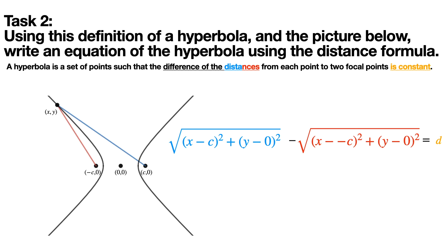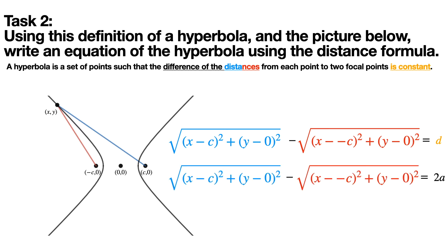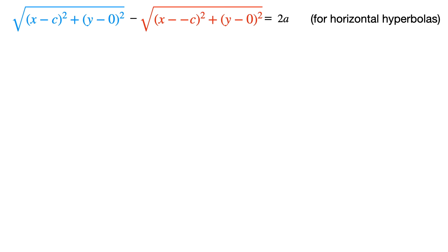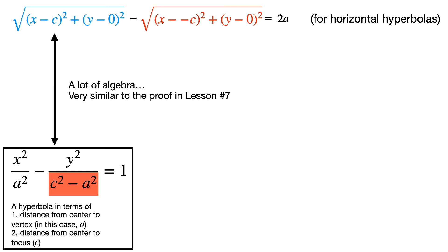Because we know that the constant difference d is equal to 2a — the distance using the vertices of a hyperbola — we could write it like this. And this is for a horizontal hyperbola; for a vertical it would be 2b. From this point, if you did a lot of algebra very similar to how we did it for an ellipse in lesson 7, you will eventually get the equation x squared over a squared minus y squared over (c squared minus a squared) equals 1.